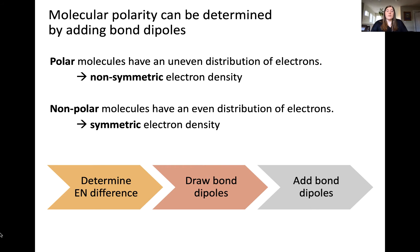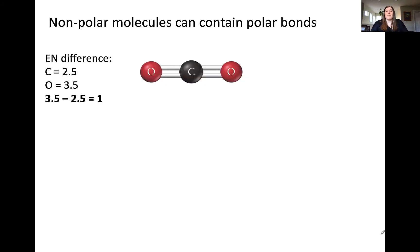Once we do that, we can add the bond dipoles together. If they cancel, we'll have a symmetric electron density — a nonpolar molecule. If they don't cancel, we'll have a polar molecule, meaning the electron density is non-symmetric. Let's try this out.